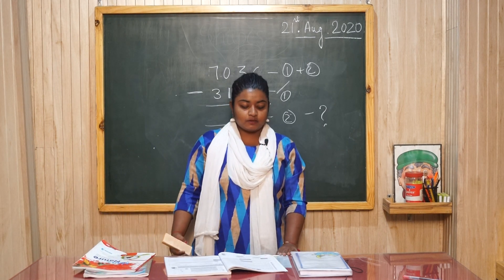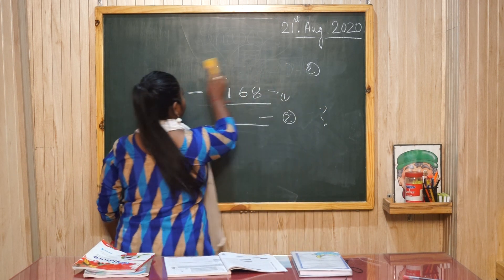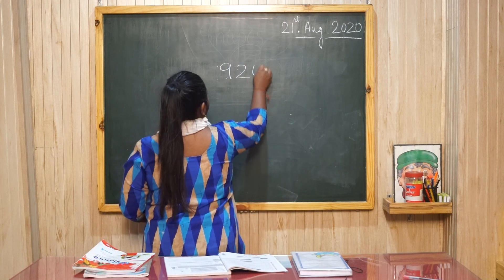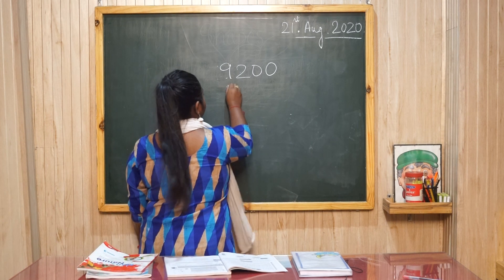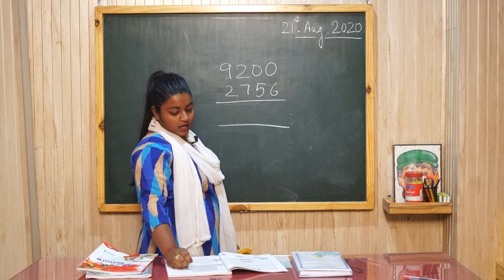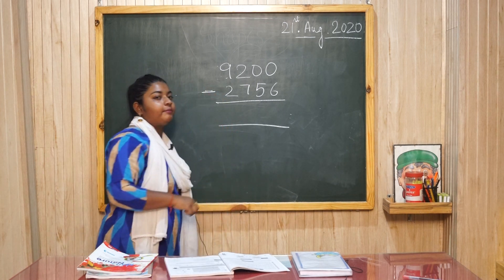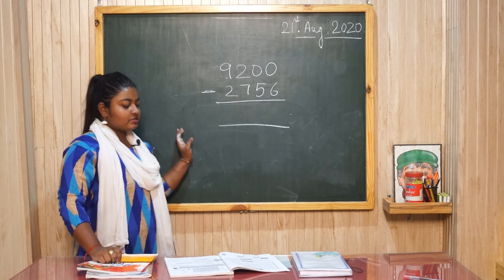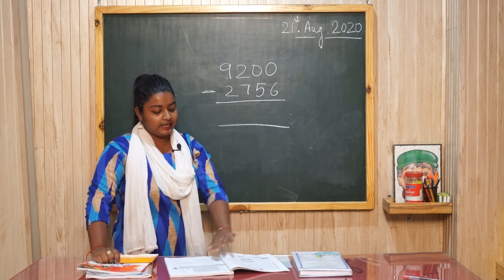Now the last is question 10. Mr. Pande has 9,200 in the bank. 9,200 उनके बैंक में हैं. He withdraws 2,756. How much money is left in the bank now? कितना money बचा है बैंक के अंदर? So you will deduct from this. You will write, therefore, Mr. Pande had this much amount left in his bank.